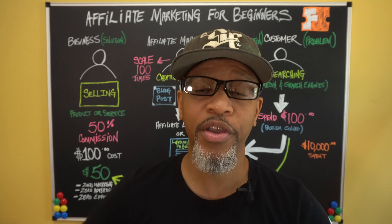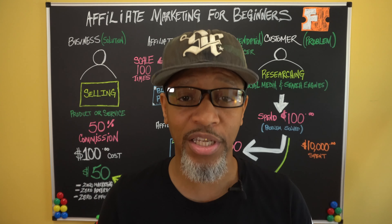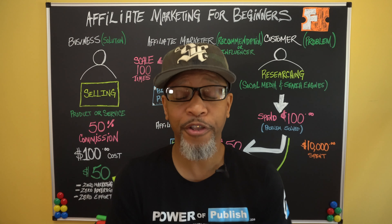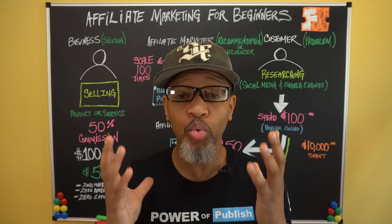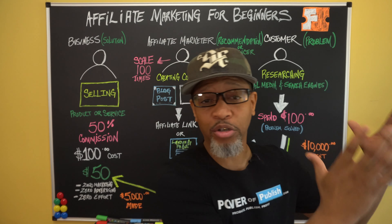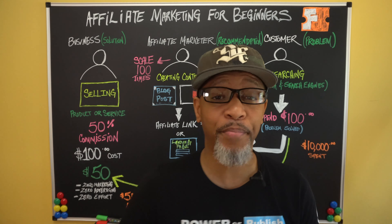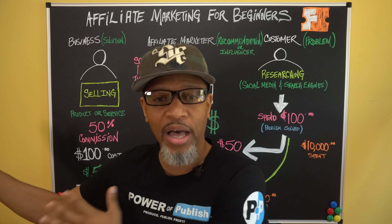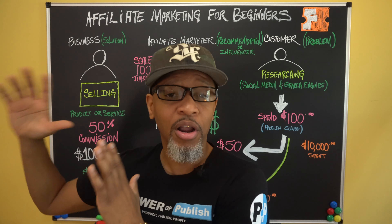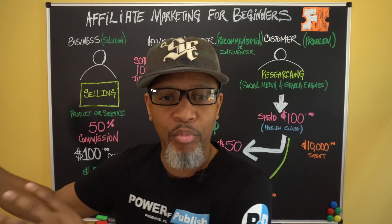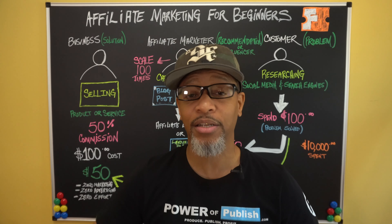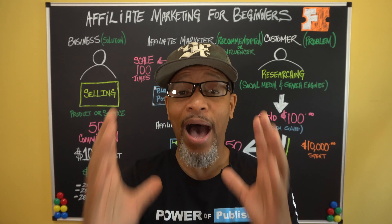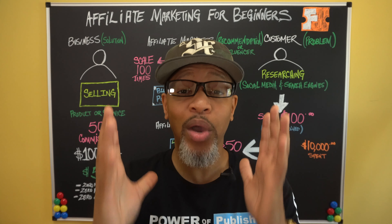What are the four core steps of affiliate marketing? Number one, find a product or service that you like and want to sell. Number two, create content to promote that product or service via video, images, text, or audio. Number three, give a call to action in your content to send them to an affiliate link or to a landing page to collect an email. Number four, wash, rinse, and repeat.